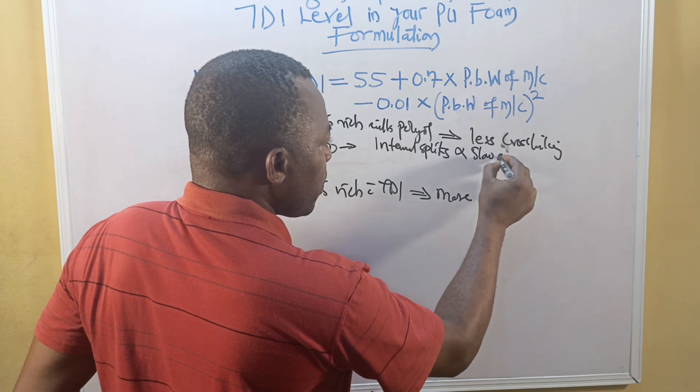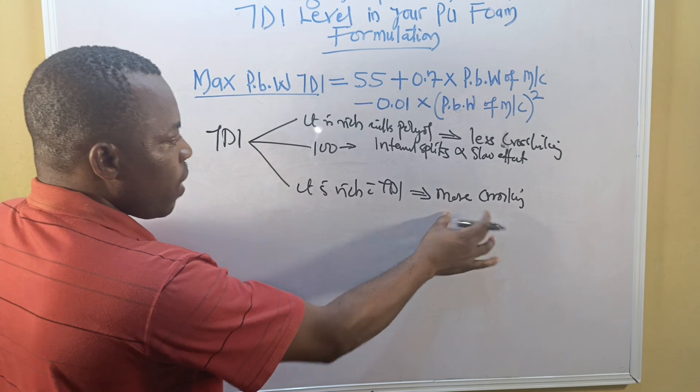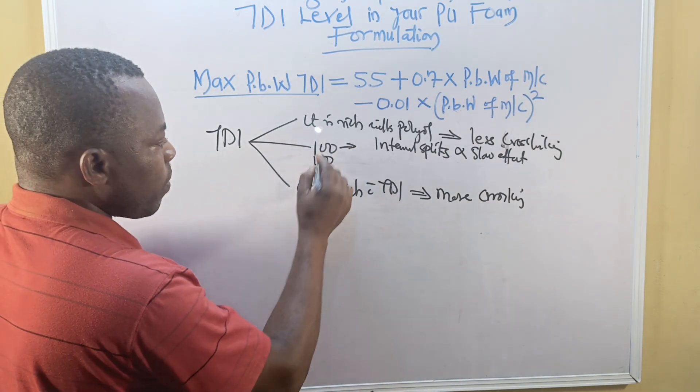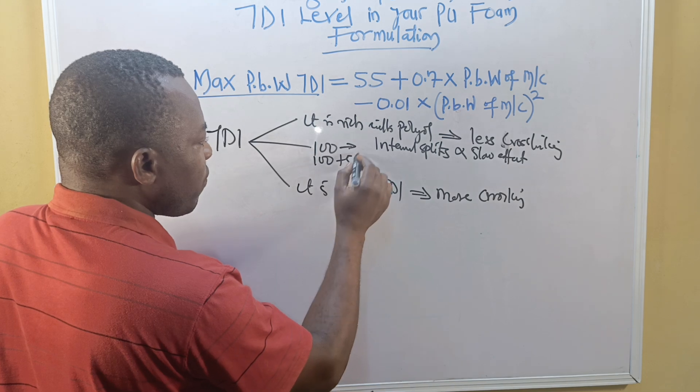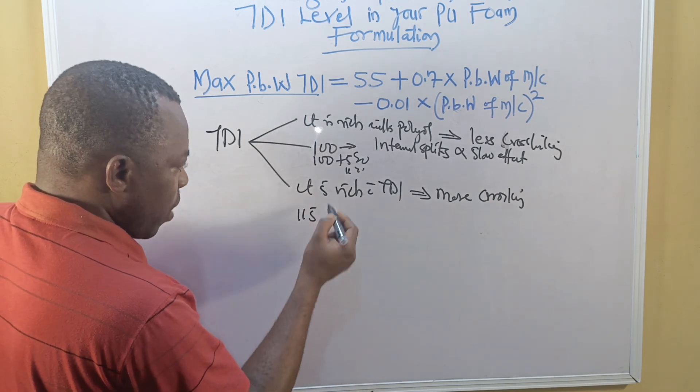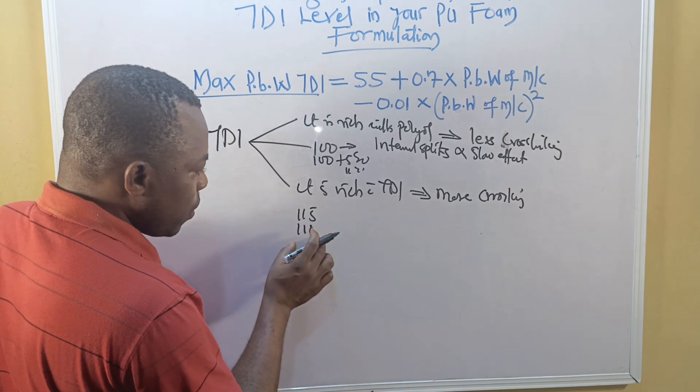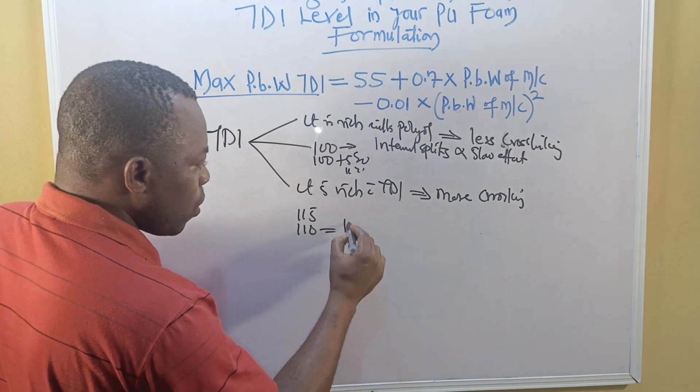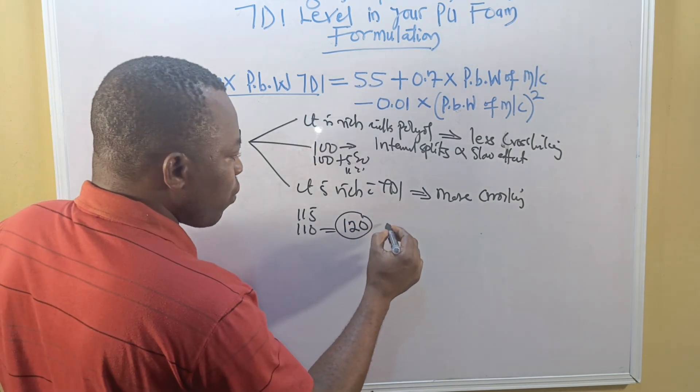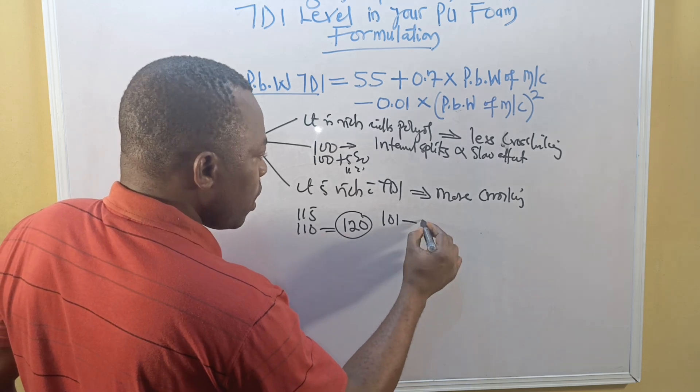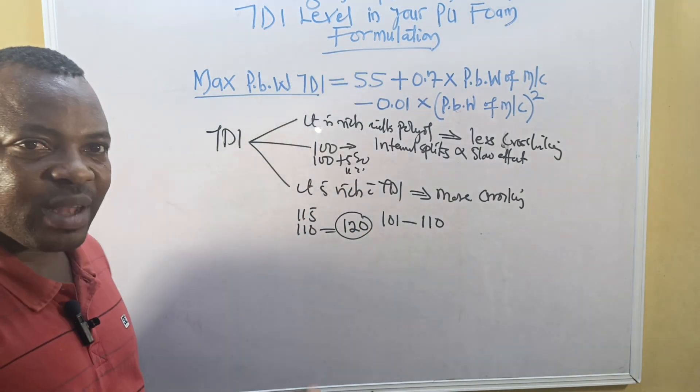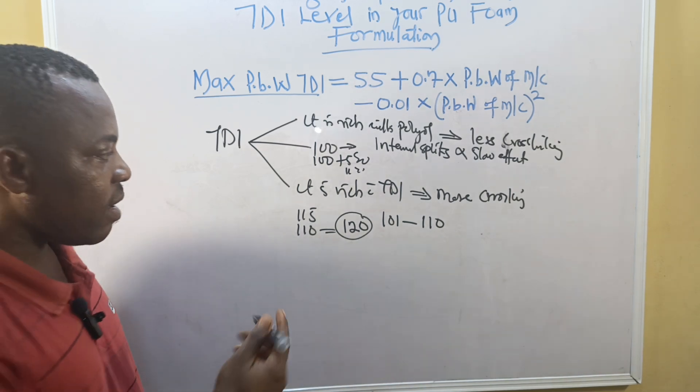If you are not careful, you will have internal splits in the foam. With low cross-linking, it will lead to slow curing effects. The index you can take from 100—if you add 5%, that's 105; 10% gives 110. We have 115, up to 120. In some countries they choose between 101 to 110, but in Nigeria and Africa we like foam that is a bit hard, so we raise it up to 120.